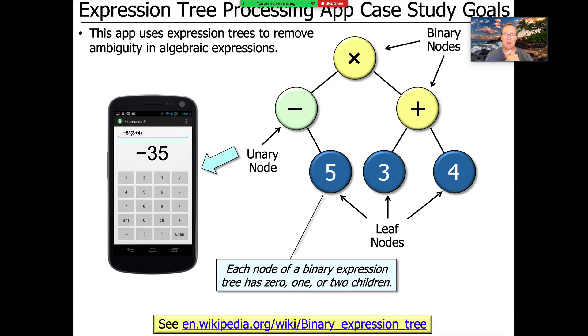which is seven times minus five. And so this allows us to be able to remove ambiguity without having to use extra parentheses. And of course the result is minus 35 because minus five times three plus four times seven is minus 35.